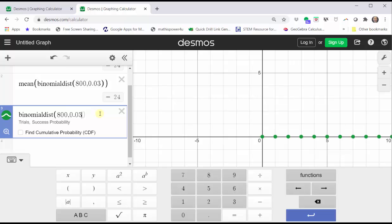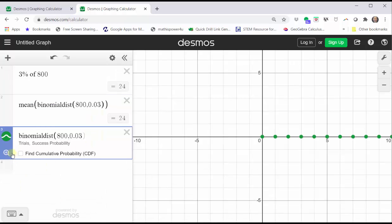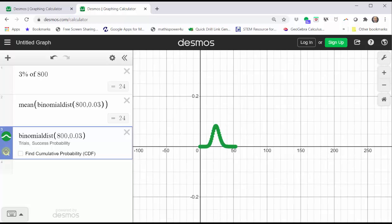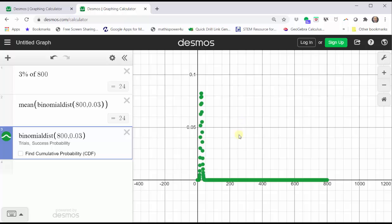From here, let's close the Desmos keypad. Let's click the zoom fit button, which is the magnifying glass below the green circle. And now we have a nice graph of the binomial distribution.